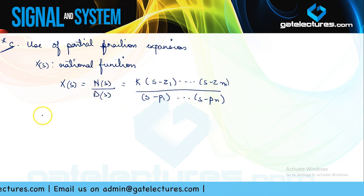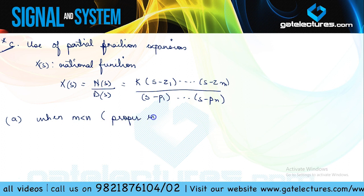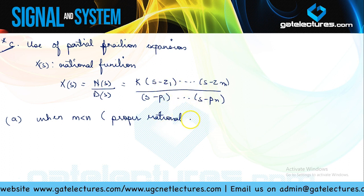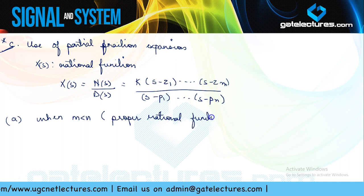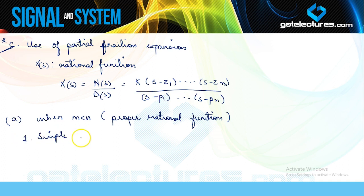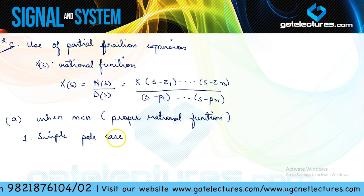We have discussed proper and improper rational functions. When m is less than n — that is, when the degree of the numerator is less than the degree of the denominator — we say it is a proper rational function. When the degree of the denominator is greater than or equal to the degree of the numerator, it is an improper rational function. The first case we consider in partial fraction expansion is the simple pole case — that is, when all poles of X(s) are simple, meaning distinct or different poles with no repeated poles.